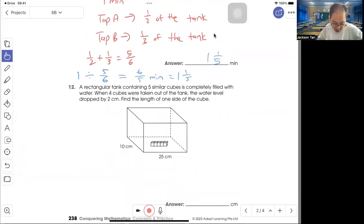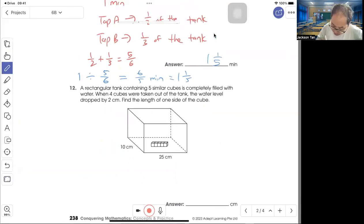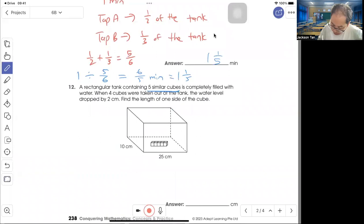Question 12: A rectangular tank contains five cubic meters and it's completely filled. Now four cubic meters are taken out, so it's dropped by 2 cm. Find the length of one side of the cube.